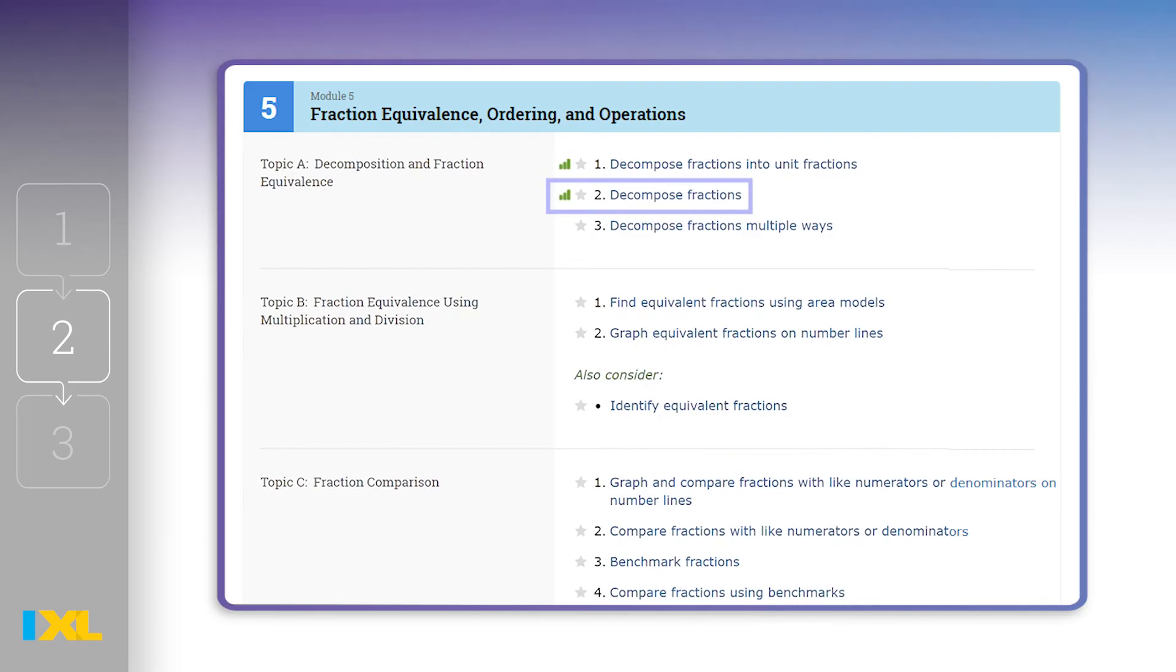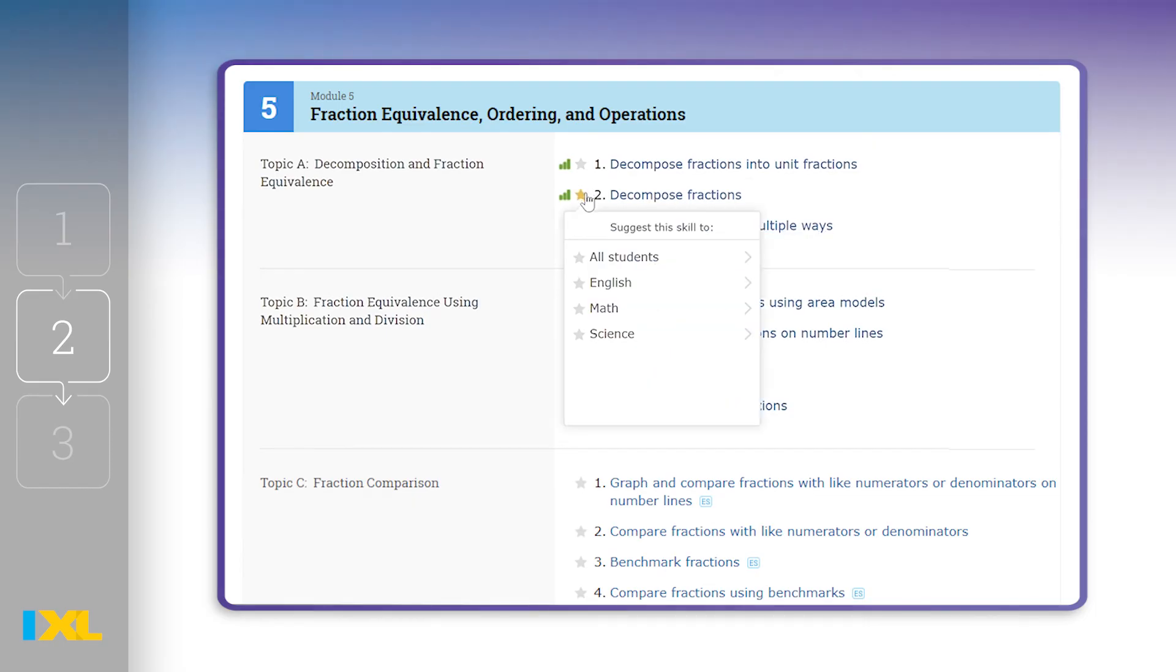You can also assign this skill for homework through your learning management system or by clicking the star next to the skill name. Again, have students work to that smart score of 80.